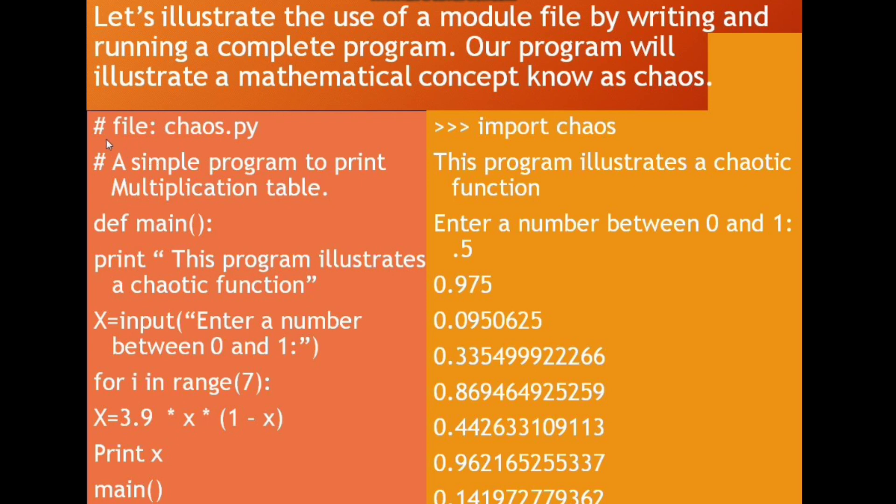Here, this is our program. This is our module. First, it should be saved with the name chaos.py. The .py extension indicates that this file is a Python module.